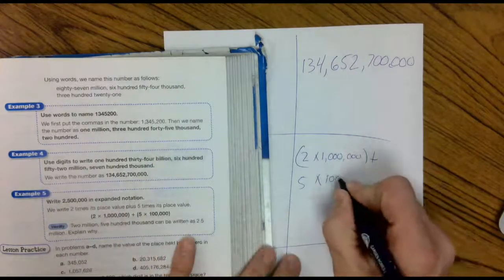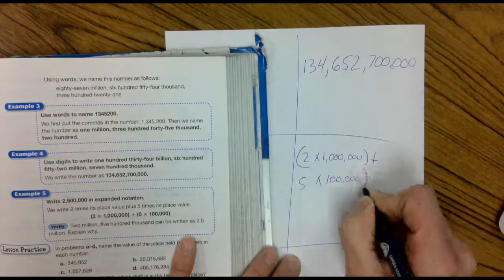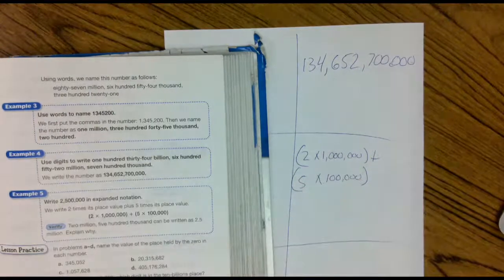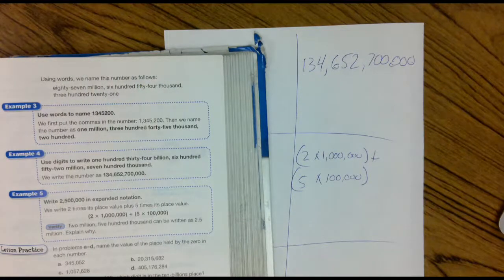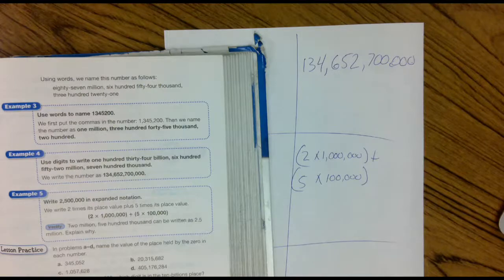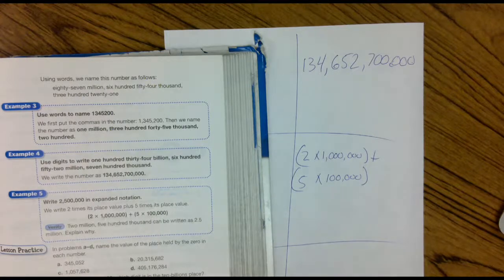Two times one million plus my next face is five times. It's in the hundred thousandth place, so you're going to have five zeros. Two, three, four, five. And put those in brackets. Expanded notation. Face times place.